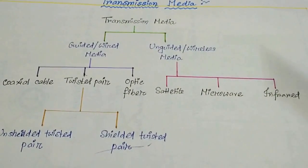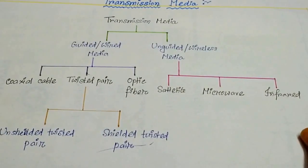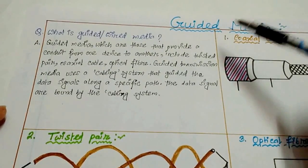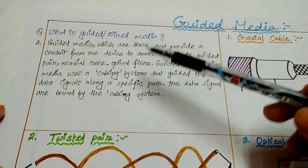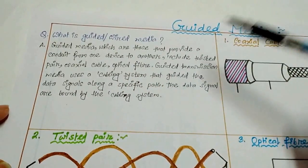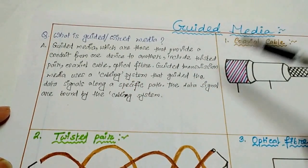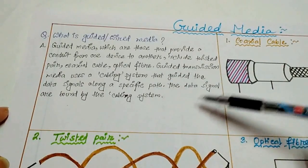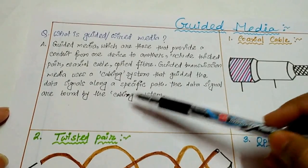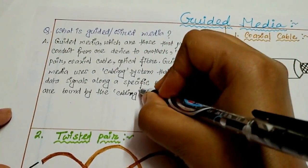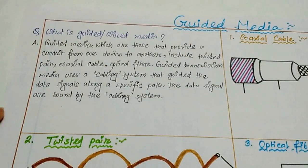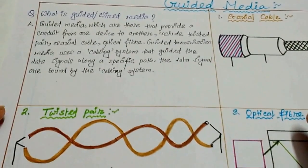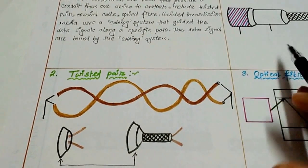This is the diagram of different types of transmission media. Now I am going to discuss about the guided media. What is guided media? Guided media are those that provide a conduit from one device to another, including twisted pair, coaxial cable, and optical fiber. Guided transmission media are used as a cabling system that guides the data signals along a specific path. The data signals are bound by the cabling system.